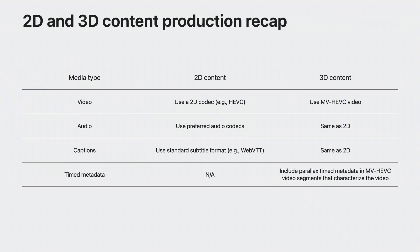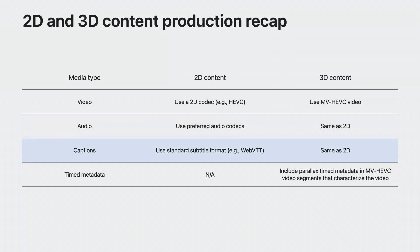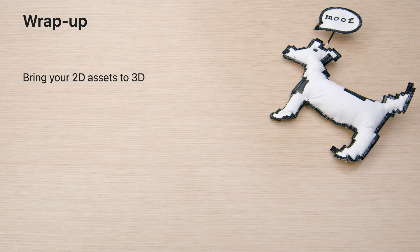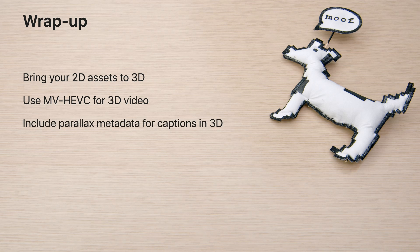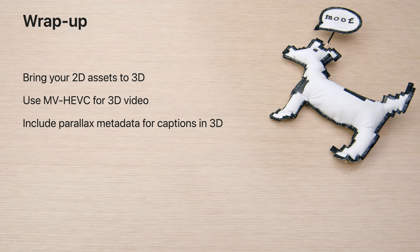So in our journey, we've looked at 2D and 3D delivery with HTTP live streaming. For video, I introduced MV-HEVC. For audio, we noted that the same audio streams can be used across 2D and 3D. For captions, the same streams can likewise be used across 2D and 3D. Finally, a new timed metadata format is introduced to characterize the 3D video's parallax, allowing the same captions to be used. To wrap up, we've made it as easy as possible to bring your existing 2D content to a spatial experience. With some small modifications to your current 2D pipeline, you can support 3D content using MV-HEVC, and you can even continue to use all your existing captions from 2D assets. But if you provide timed metadata, those captions can be unobscured and provide a comfortable viewing experience. Watch our companion session for considerations in implementing playback of video. We look forward to the great new content you'll be delivering. Thanks for joining us today.